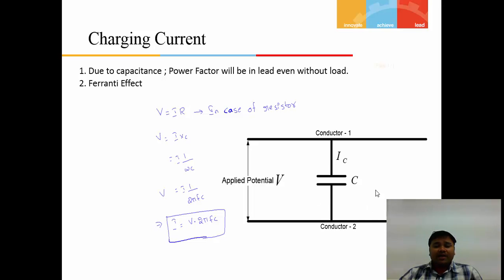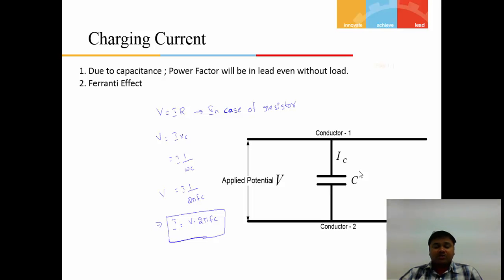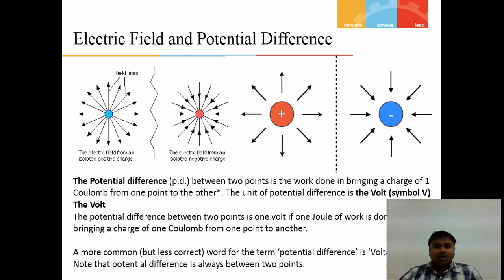Due to the parallel conductors, the power factor will be improved and will be in a leading condition. This leading condition reduces the inductive reactance, and once the inductive reactance is reduced, the power factor is automatically improved and the transmission efficiency will also be improved.